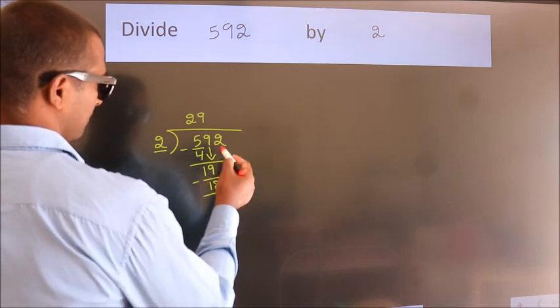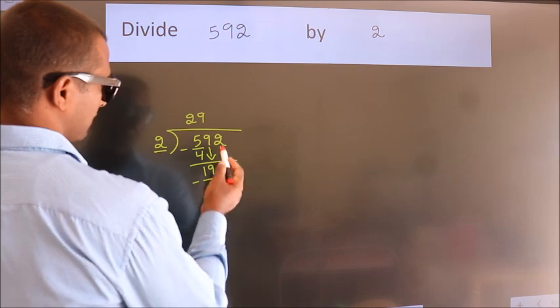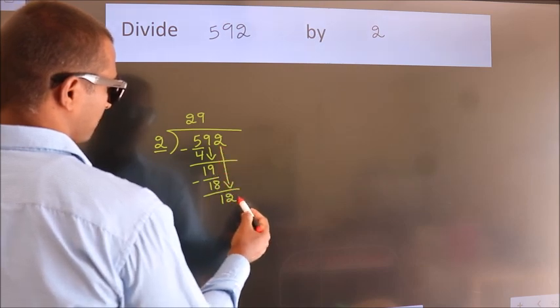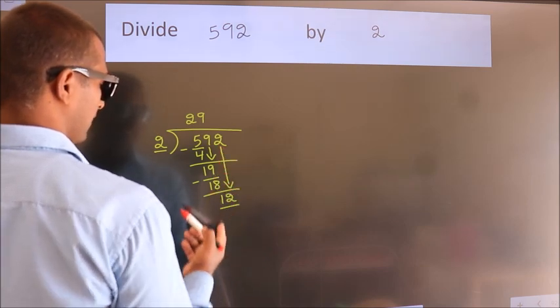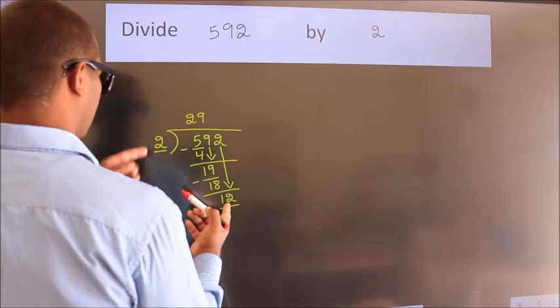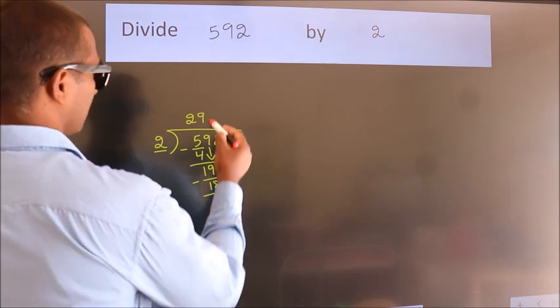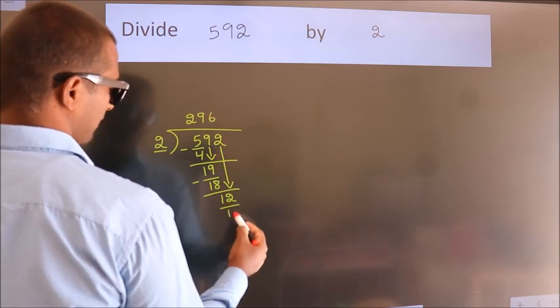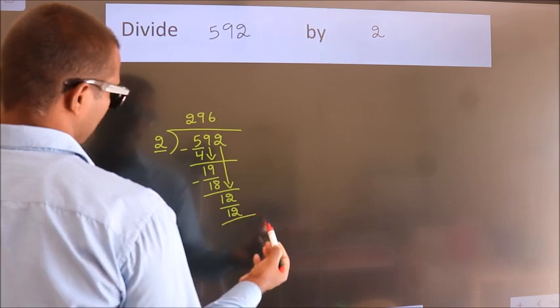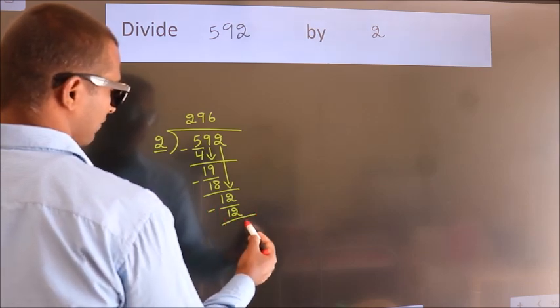After this, bring down the beside number, so 2 down, so 12. When do we get 12? In 2 table, 2 6, 12. Now we subtract, we get 0.